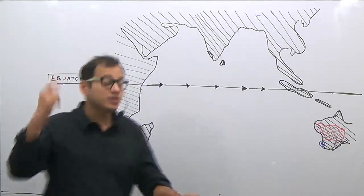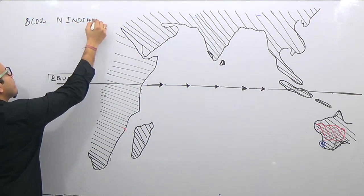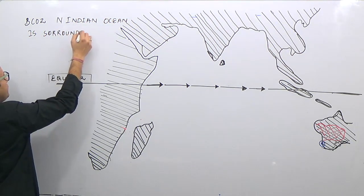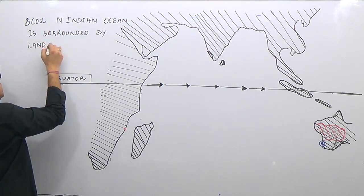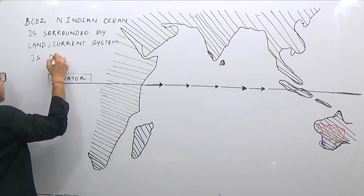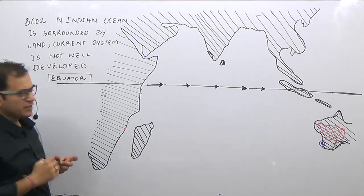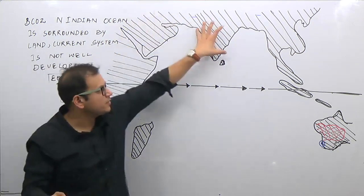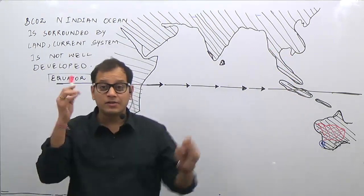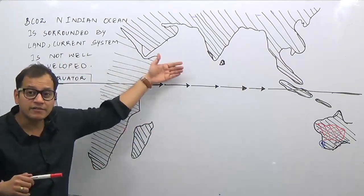Because the northern Indian Ocean is surrounded by land, its current system is not well-developed. It is surrounded by Africa, the Middle East, the Indian subcontinent, and Southeast Asia — including Java and Sumatra — and therefore the current system is not well developed. Remember the color codes: red stands for warm ocean currents and blue stands for cold ocean currents.